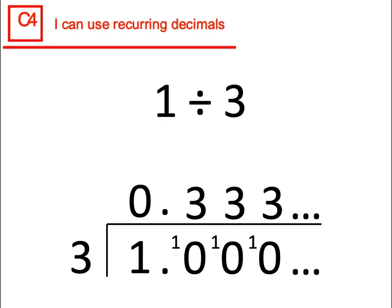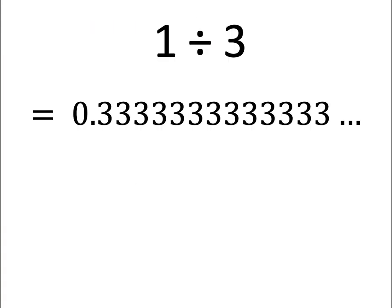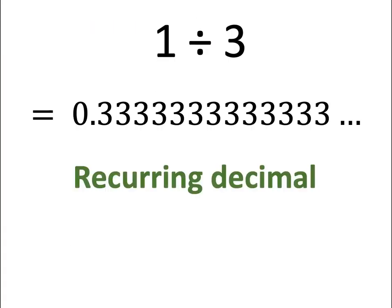When we have a decimal repeating, we call this a recurring decimal. Writing a lot of repeating decimals would waste a lot of paper, so instead mathematicians have come up with a technique to show this. The way we represent a recurring decimal is by putting a dot above the recurring decimal number.